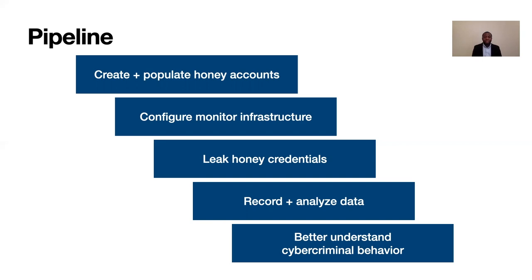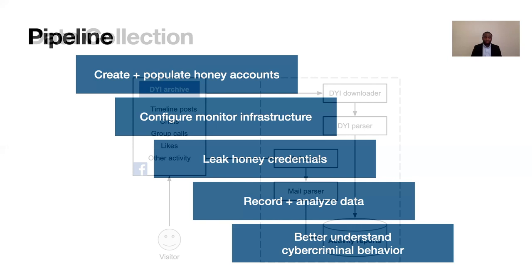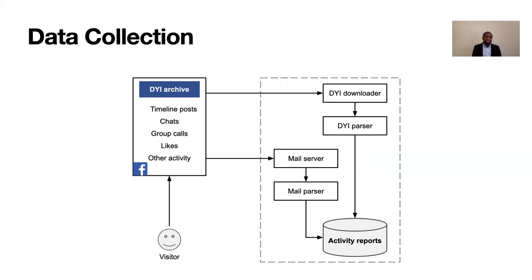We record and analyze data that accrues from the honey accounts to shed light on the behavior of criminals within stolen accounts. Each Facebook account has a feature known as DYI — Download Your Information — which contains a record of activity within each account, including timeline posts, their content, and when they were created. At the end of experiments, we download the DYI archives of all the accounts and analyze that data offline.